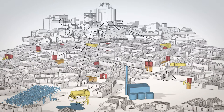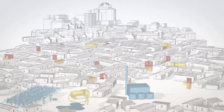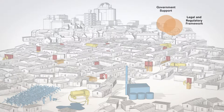Talking about stakeholders, we should know what are the financial transfers between them — for example, how much do households currently pay for emptying services. You should also check the enabling conditions: how is the government support, what is the legal and regulatory framework, what are the rules, and where are the gaps?